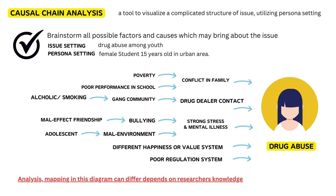Then, brainstorm all the factors you can conceive in your mind. For instance, the gang community who may introduce drugs to her. Also, she may have conflicts with her family, so they cannot know about her drug abuse and stop it. She may also have heavy mental stress and wants to escape from reality by drugs.